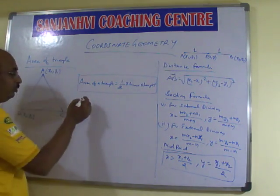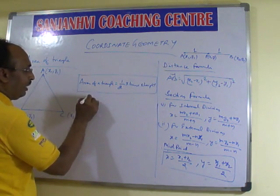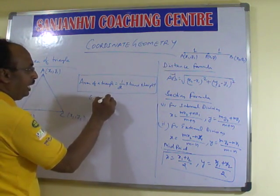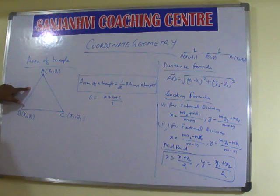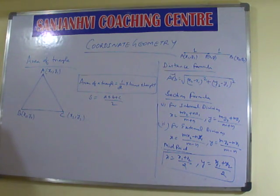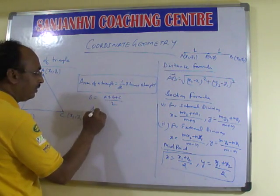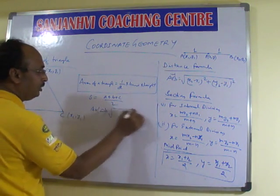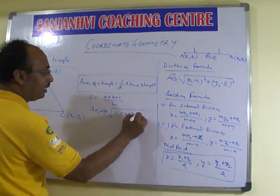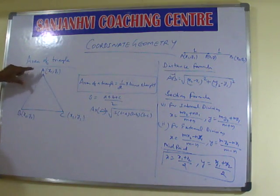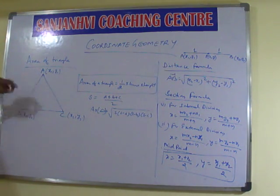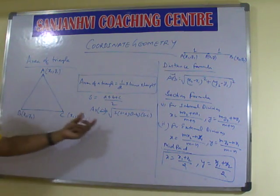By utilizing Heron's formula we can do it. In Heron's formula, we find the semi-perimeter S, which equals (A + B + C) / 2, where A, B, C are the sides. Area equals the square root of S(S−A)(S−B)(S−C). For that, we need to find AB, BC, CA. If we have AB, BC, CA — by finding them using the distance formula we can solve the problem. No problem, by utilizing this we can solve it.